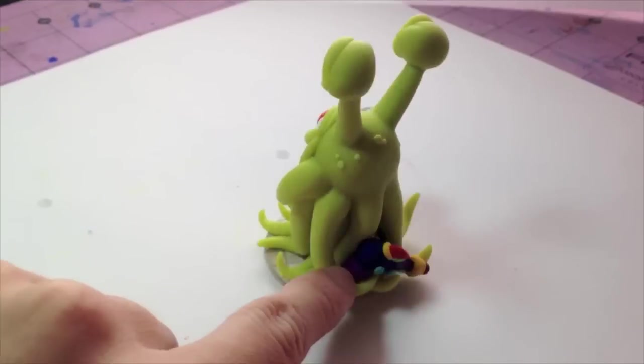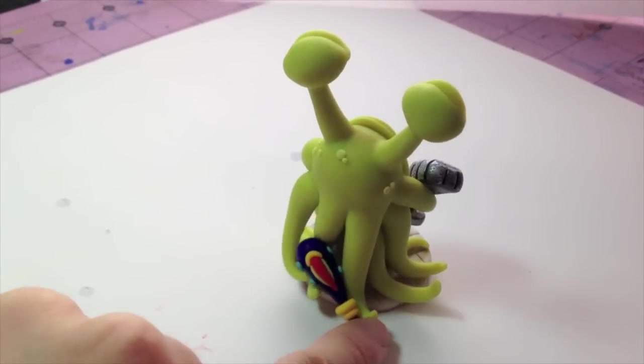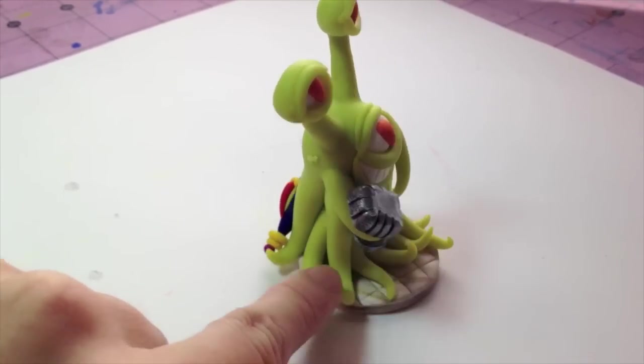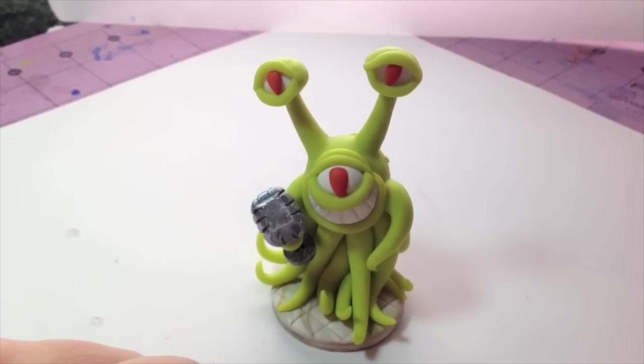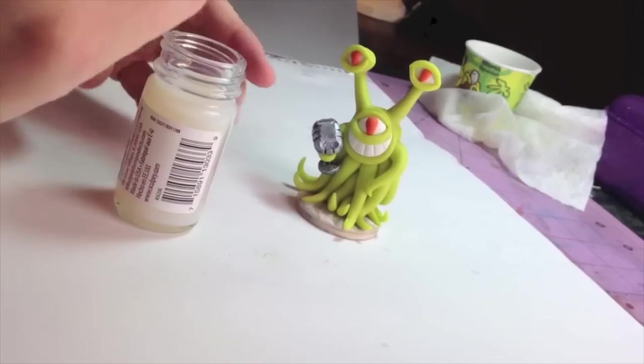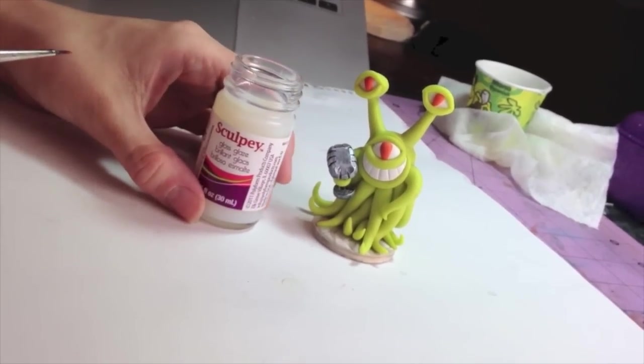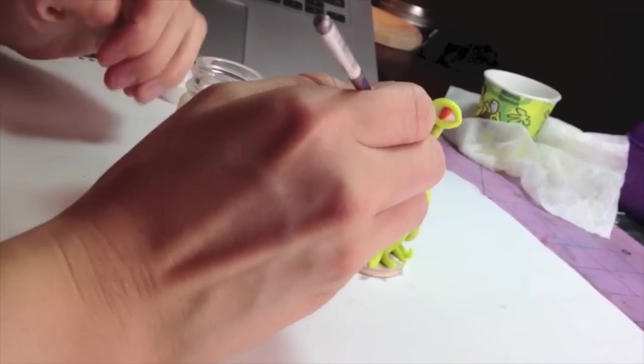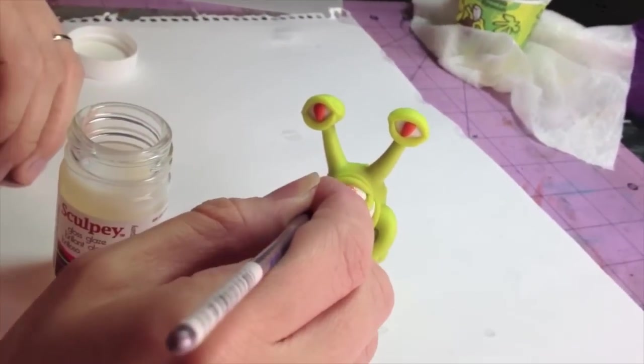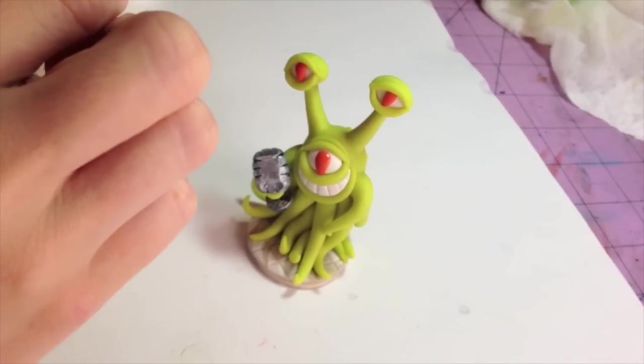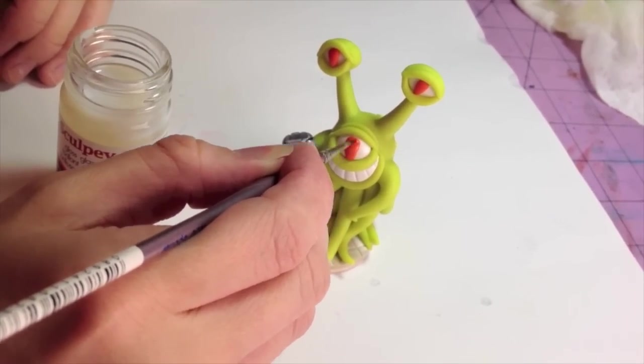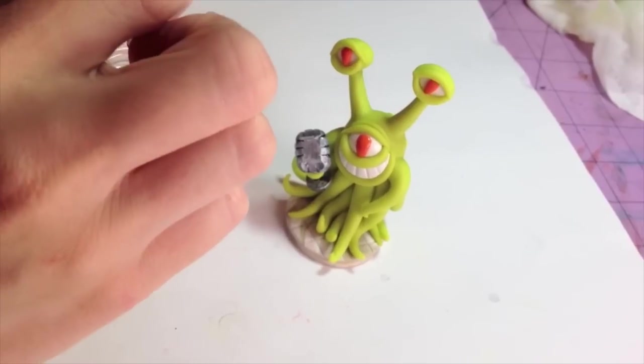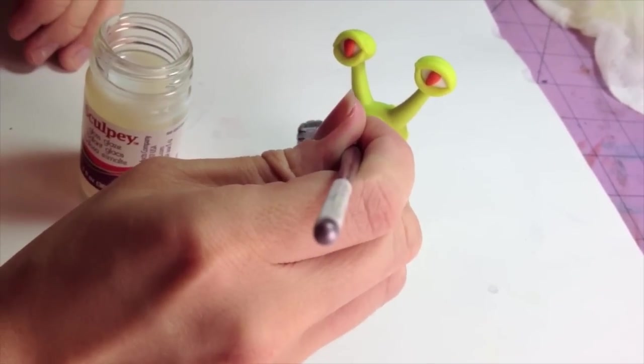Came out of the oven just fine. And remember when you take something directly out of the oven, it's going to be really soft still and very fragile. So be careful with it. So I've got some Sculpey Gloss Glaze. You don't need a whole lot. Just kind of paint it on. And I usually do this on just the eyes and the smile. This kind of gives it a little bit more realism. Kind of brings it to life just a little.